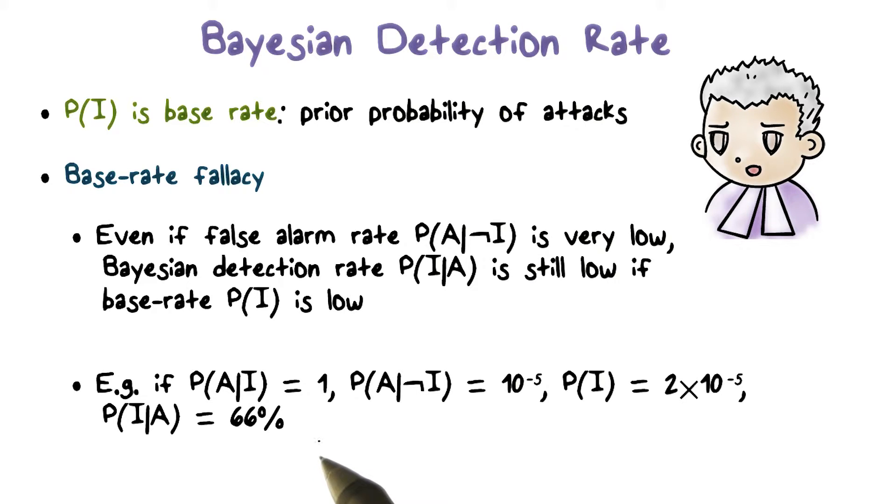In other words, one third of the time when the IDS produces an alert, there's no intrusion.